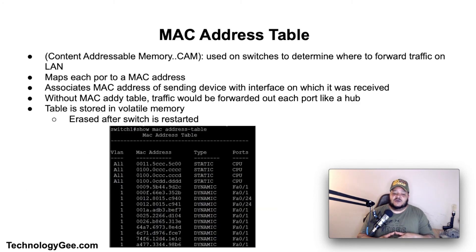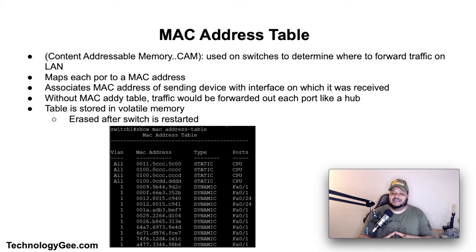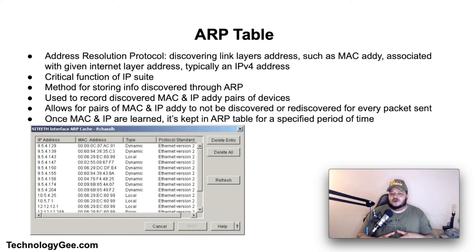A MAC address table, sometimes called a content addressable memory table, is used on ethernet switches to determine where to forward traffic on a LAN. MAC address tables map each port to a MAC address. When a switch receives a frame, it associates the MAC address of the sending device with the interface on which it was received. Without a MAC address table, traffic would be forwarded out each port like a hub. This table is stored in volatile memory, so associations will be erased after the switch is restarted.